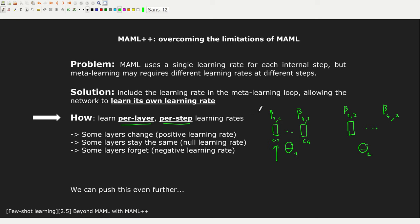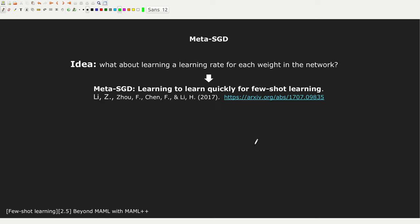We can push this idea even further, and this is what has been done in Meta-SGD, where for each weight of your network you have a separate learning rate. So if your neural network has 1 million parameters, you have 1 million learning rates. The idea is that you are learning an SGD algorithm — they call this Meta-SGD because you are training it using the meta-learning approach. This is also an interesting paper; I invite you to give it a look.